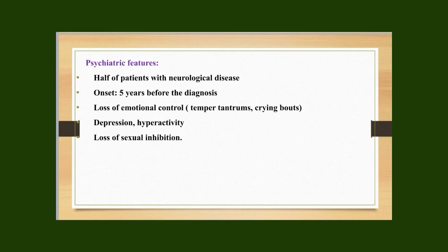Wilson's disease patients also manifest psychiatric features; all patients with neurological disease have psychiatric features. These usually start at least five years before the diagnosis of Wilson's disease. Common presentations include loss of emotional control like temper tantrums and crying bouts, depression, hyperactivity, and sexual disinhibition.